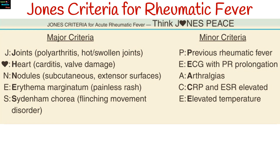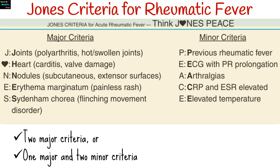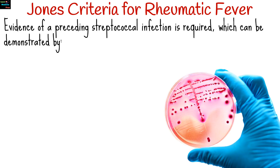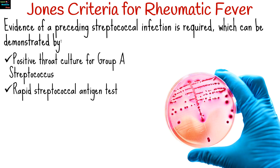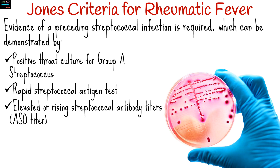For a definitive diagnosis of rheumatic fever according to the Jones criteria, the following combinations are used: two major criteria, or one major and two minor criteria. Additionally, evidence of a preceding streptococcal infection is required, which can be demonstrated by positive throat culture for group A streptococcus, rapid streptococcal antigen test, or elevated or rising streptococcal antibody titers.